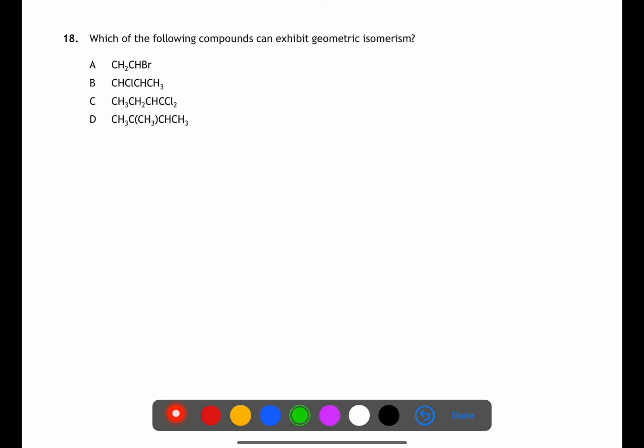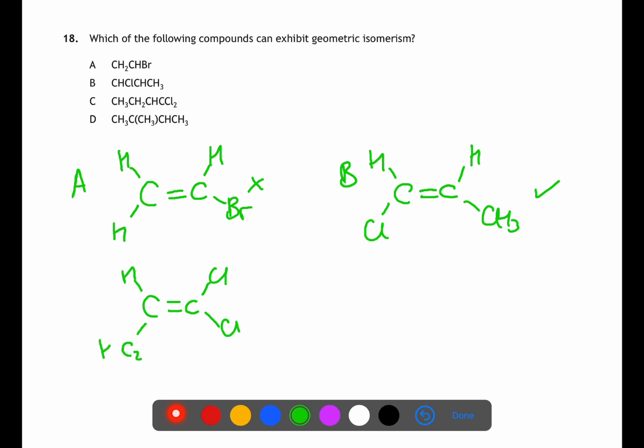Question 18 is looking at geometric isomerism. Geometric isomerism happens when you have a lack of rotation either around a double bond or within a ring structure. For geometric isomerism to happen you need to have two groups attached to each of the carbons in the double bond. B has two groups, the Cl and the CH3, and they're on the two different carbons therefore they can be on the same side or opposite sides of the double bond. C has both of the Cl groups attached to the same carbon, this means that they can't be on the same side or opposite sides.